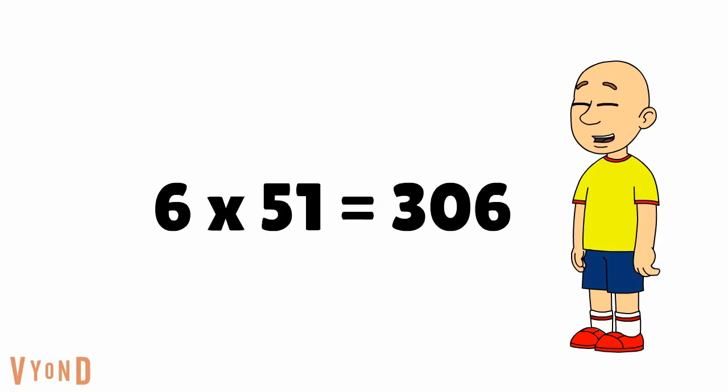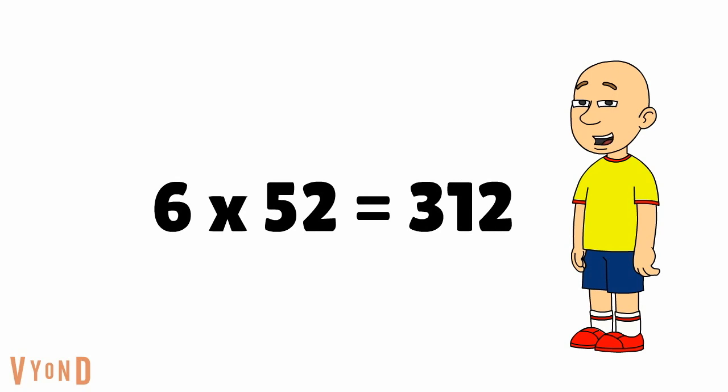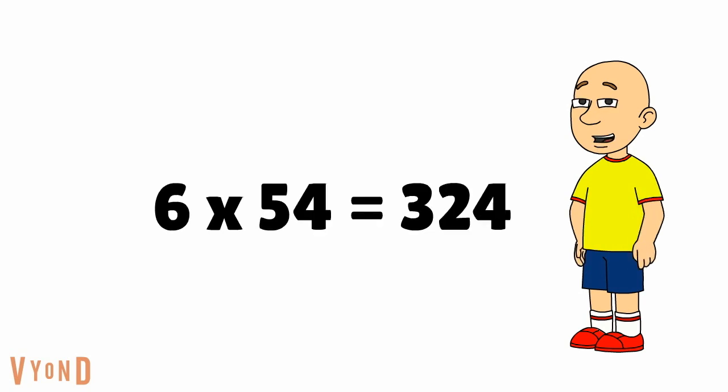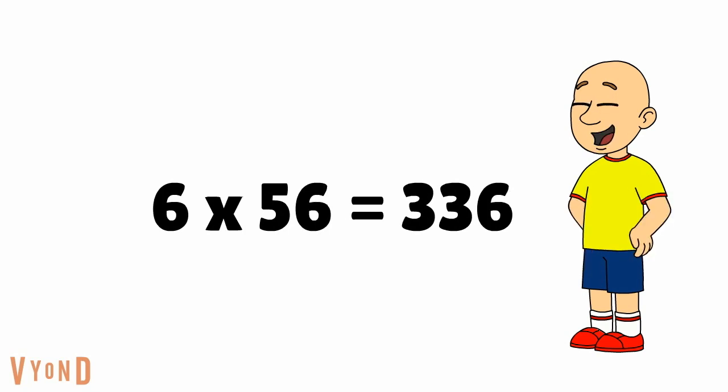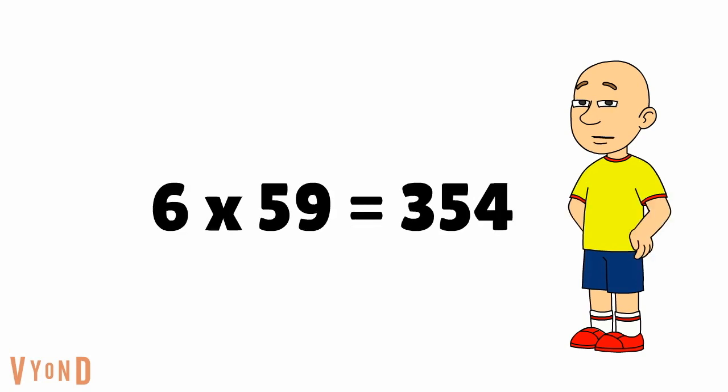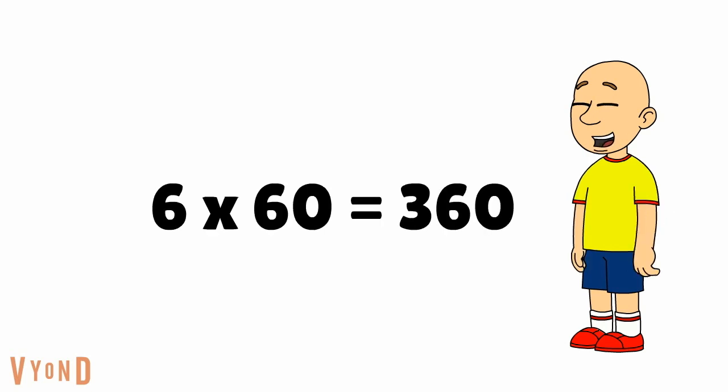6 times 51 equals 306. 6 times 52 equals 312. 6 times 53 equals 318. 6 times 54 equals 324. 6 times 55 equals 330. 6 times 56 equals 336. 6 times 57 equals 342. 6 times 58 equals 348. 6 times 59 equals 354. 6 times 60 equals 360.